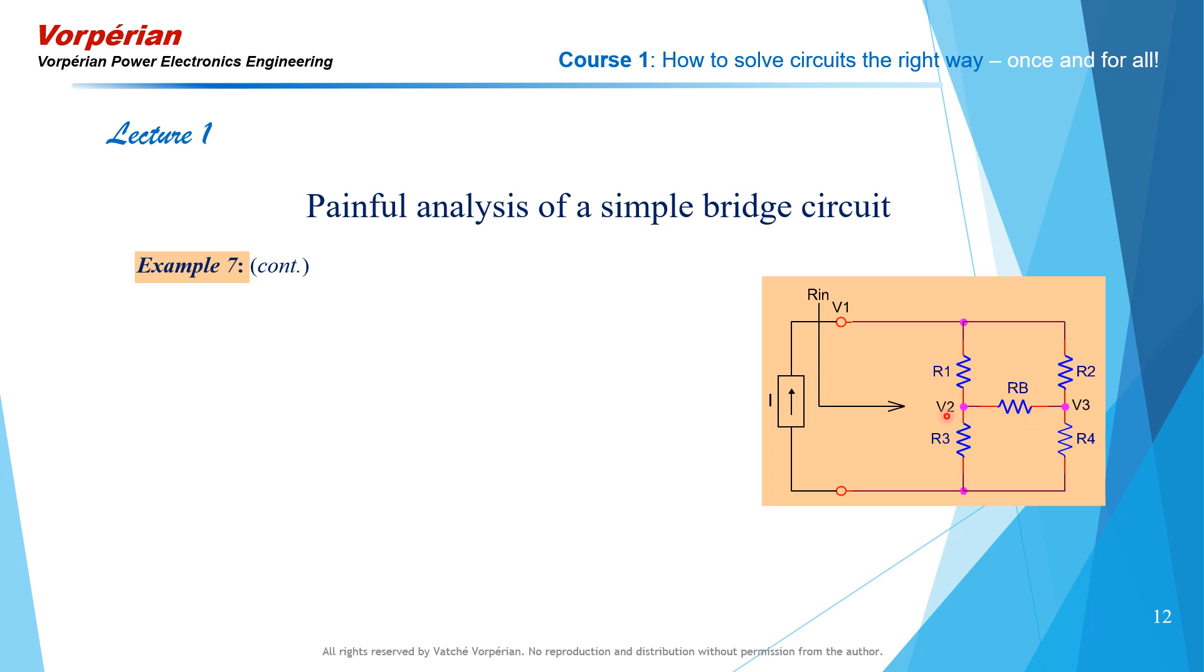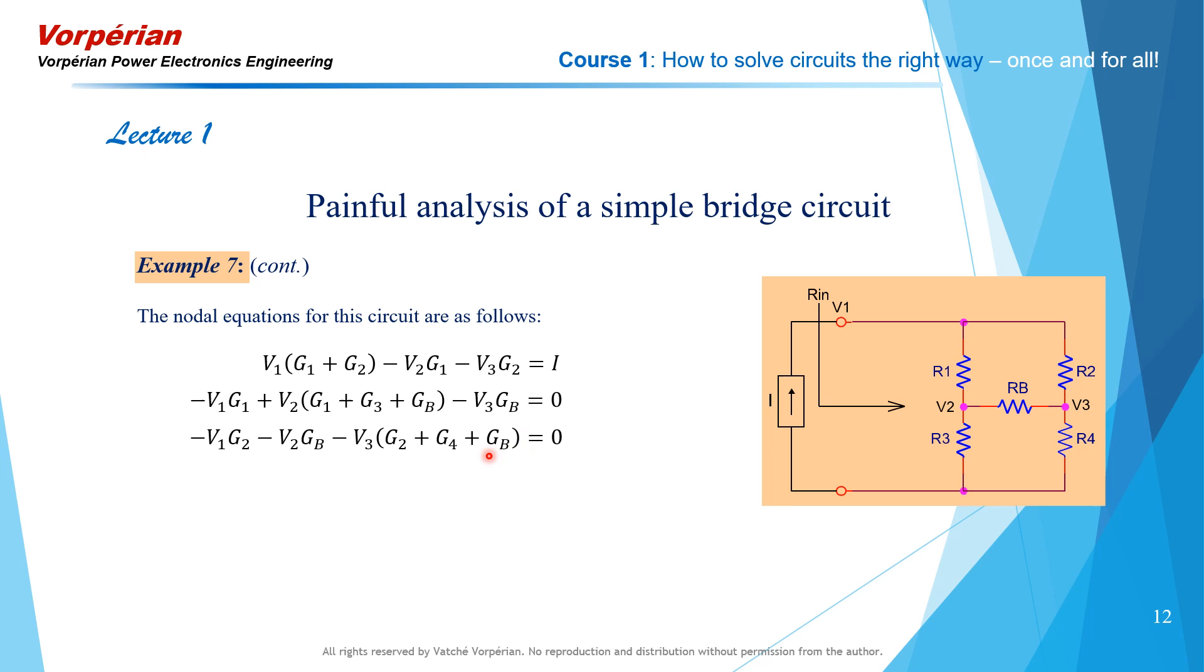We identify the three independent nodes V1, V2, V3, and we write the nodal equation at each node. At V1, we have the following equation. At V2, we have the second equation. And at V3, we have the third one. These three simultaneous equations together constitute the following matrix equation. Notice that I'm using conductances instead of resistances because conductances are more amenable to nodal analysis.